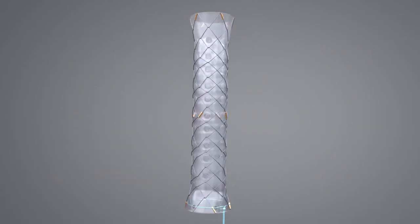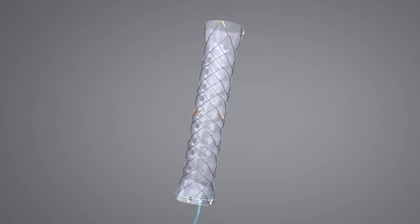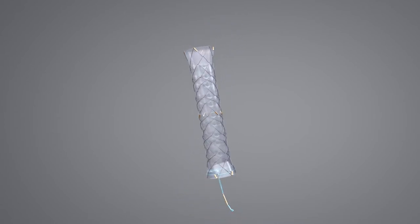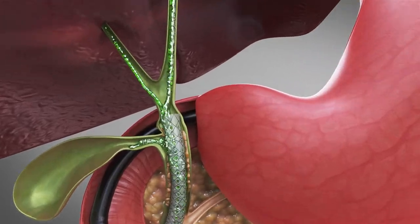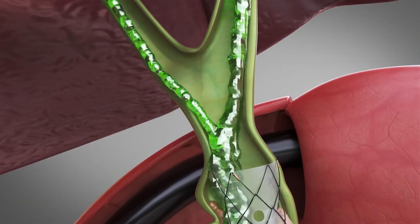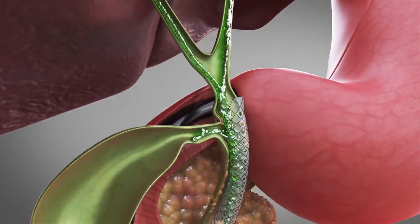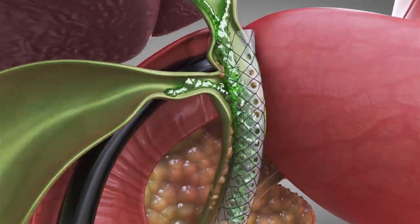Multi-hole biliary stent was created by combining the advantages of non-covered stent and fully covered stent. The multi-hole biliary stent assists with the bile drainage through the multiple holes of the silicone membrane, especially from the side branches of the biliary tree.